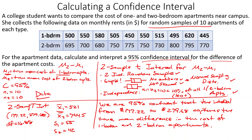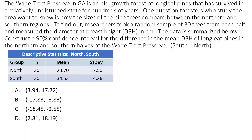Another example: the Wade Tract Preserve in Georgia is an old-growth forest of longleaf pines that has survived in a relatively undisturbed state for hundreds of years. Researchers want to compare the sizes of pine trees between the northern and southern regions. They took a random sample of 30 trees from each half and measured the diameter at breast height (DBH). Construct a 90% confidence interval for the difference in mean DBH, south minus north.